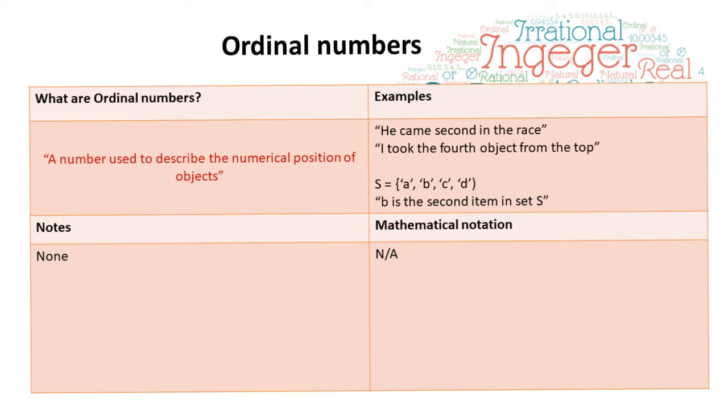And finally, we have ordinal numbers. This is a number used to describe the numerical position of objects. For example, he came second in the race, or I took the fourth object from the top. Here we have a set S, consisting of the elements A, B, C, and D. And we could say, for example, B is the second item in set S.